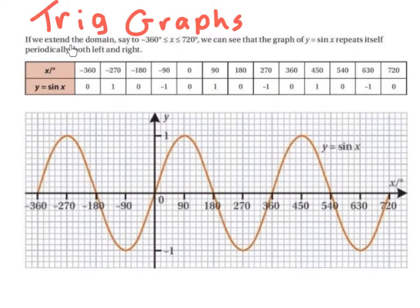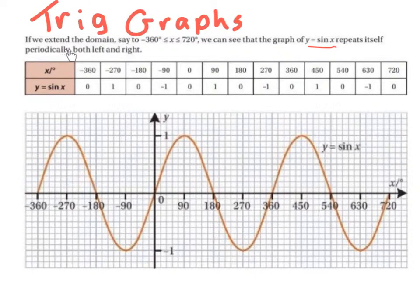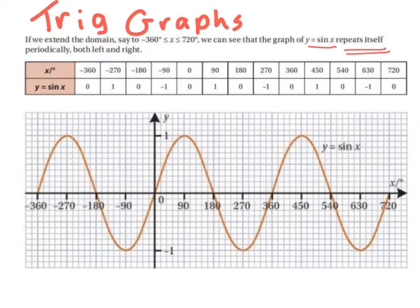Trigonometric graphs. If we extend the domain to minus 360 degrees to 720 degrees for the graph of y equals sine of x, we can see that the graph of y equals sine of x repeats itself periodically, both left and right. So when we originally drew out the graph of y equals sine of x, we started at 0 degrees and went up as far as 360 degrees. But actually, the graph of y equals sine of x continues on forever to the left and to the right.